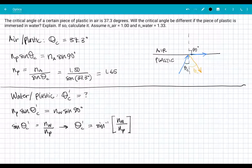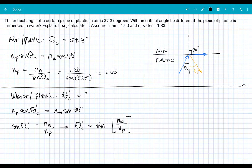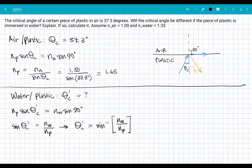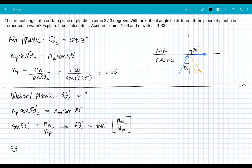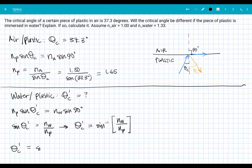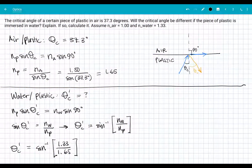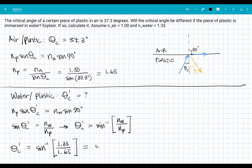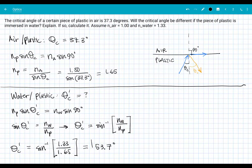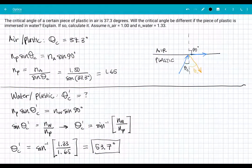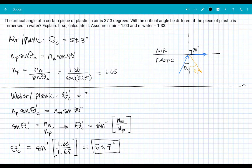So if I go ahead and finish that, then that'll give me the arc sine of 1.33 over what we got above, 1.65, the n value for plastic. And that results in 53.7 degrees. So that's my new critical angle for the water-plastic interface.